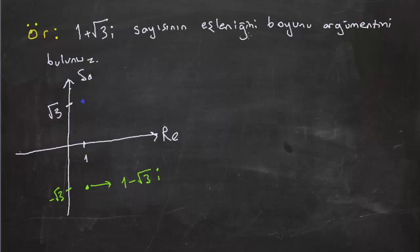Şimdi bana bu sayının, 1 artı kök 3 i sayısının boyu sorulmuş. Cebirsel de ilerlemem her zaman mümkün. 1 artı kök 3 i sayısının boyu kök içerisinde 1'in karesi artı kök 3'ün karesi. Bu da 1 artı 3'ten kök 4, 2.